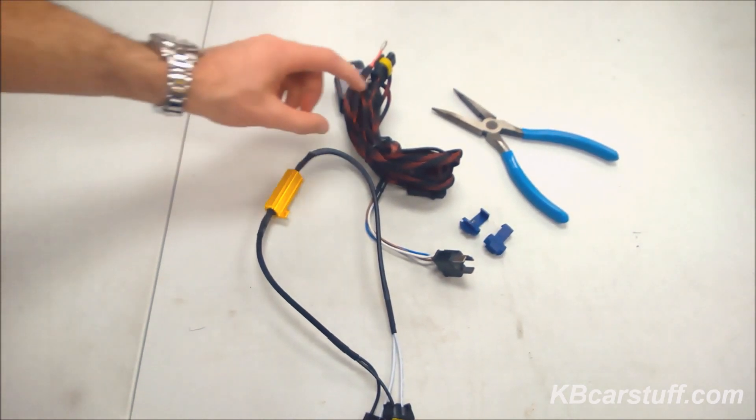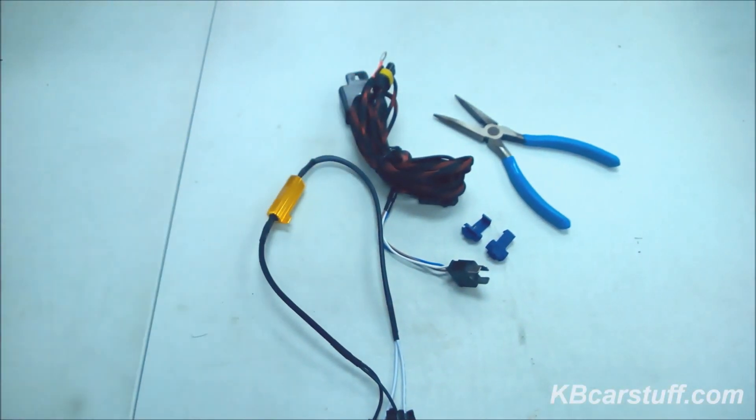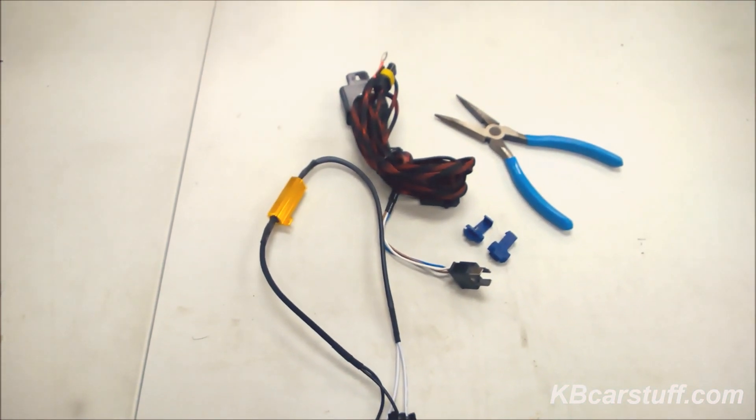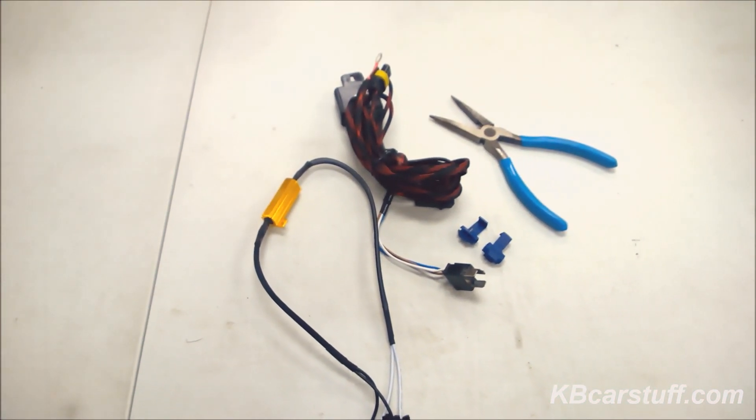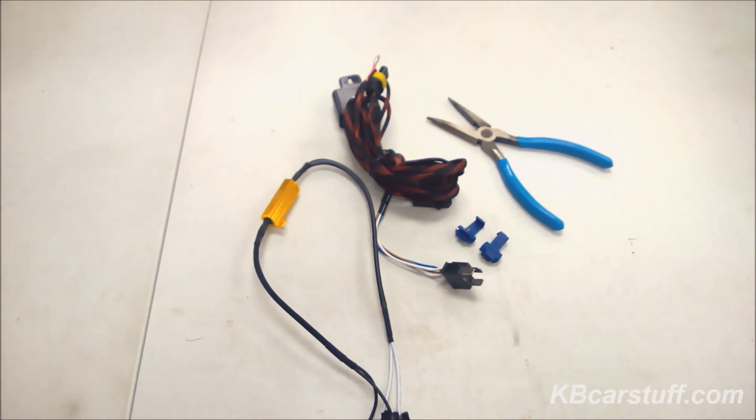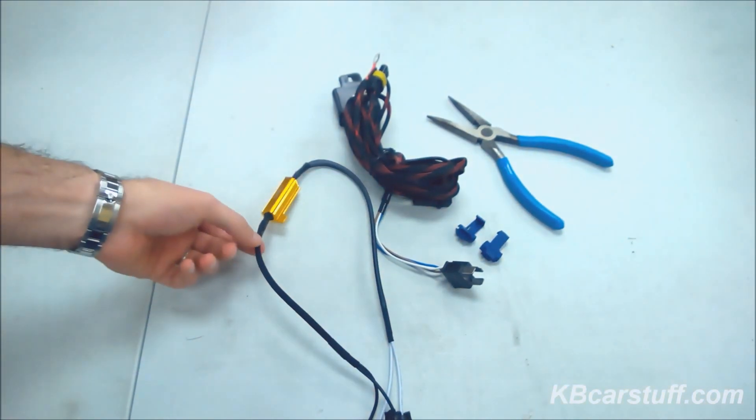What happens is when you install a relay harness and you install an HID kit, you're not actually putting any draw on your vehicle's stock headlight harness, so the car is thinking that your headlights are burnt out. So what we have is we have a 50 watt load resistor,